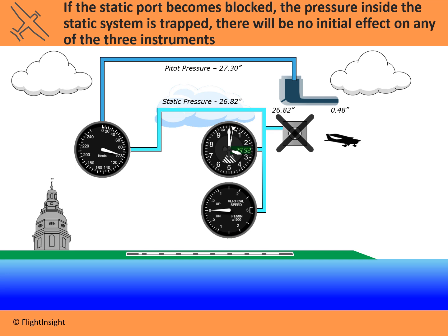It won't change. Remember, zero is vacuum — that's not happening here. We're not sucking the air out of the static port; we're just covering it up so that changes in air pressure aren't introduced into the system. So initially there's no change on the instruments — we still have that same 27.3 inches of pitot pressure and 26.82 inches of static pressure. But if we change altitude or the speed we're flying through the air, it won't be detectable by the static pressure system.